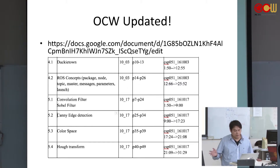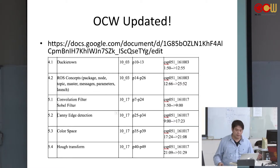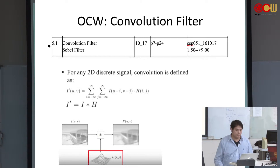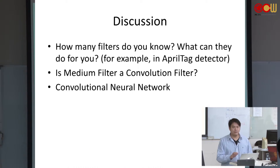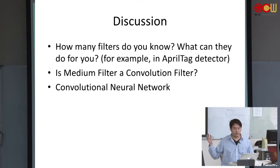The OCW covers filters, Canny edge detection, color space, and Hough transform — each section is not very long, maybe just 15 minutes each. The updated OCW should help you better understand the theoretical part of the Duckietown vision algorithms. For the convolution filter section it is less than 8 minutes. I will design some discussion questions to motivate you — you can watch the videos and then discuss.